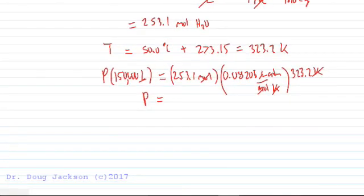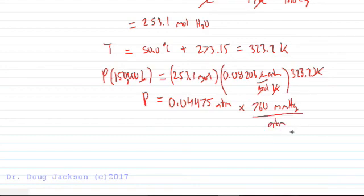But our vapor pressure is given in millimeters of mercury. So we've got to do one more conversion. We know that 760 millimeters of mercury is one atmosphere. Cancel atmospheres and we get 34.01 millimeters of mercury.